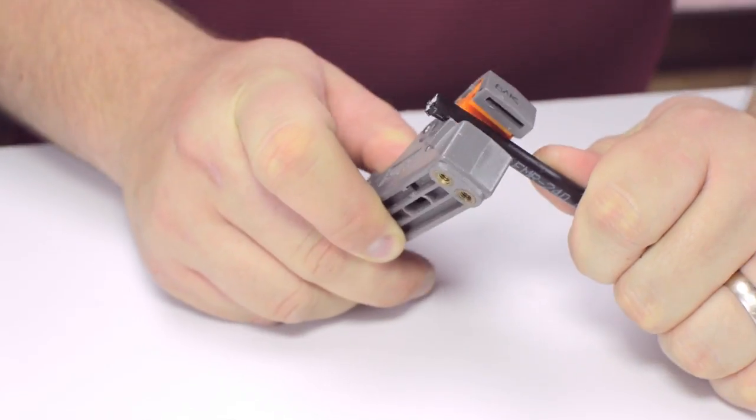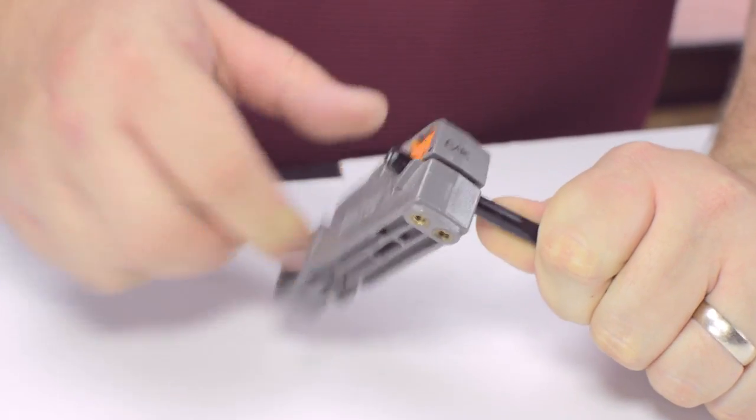Start by inserting the ferrule over the outer jacket of the cable. Then using your cable stripper, strip back the outer jacket and dielectric.